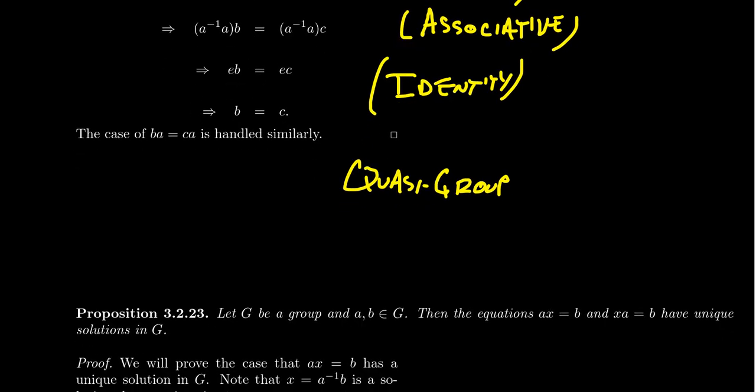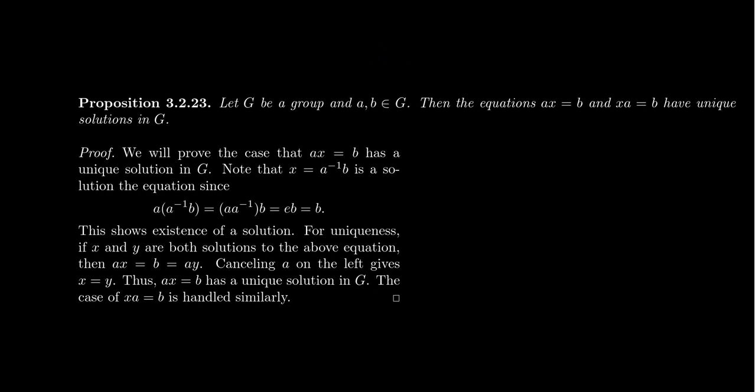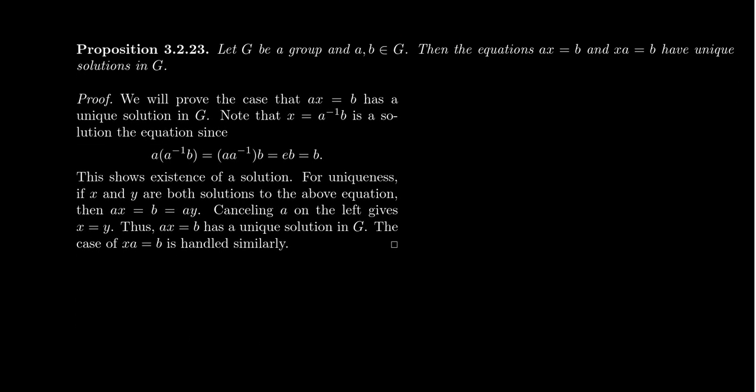But basically quasi-groups don't require associativity, which is sort of like a fatal mistake. Associativity is the best axiom out there. Things get really funky when you don't have associativity. But once you have the cancellation laws, I want to mention that you can get stuff from that. We can actually solve equations uniquely.